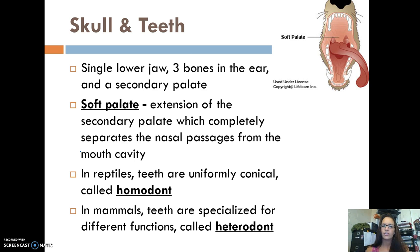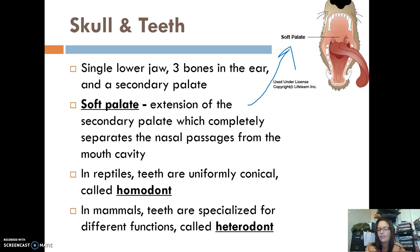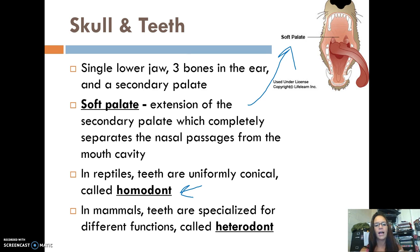In terms of the skull and teeth, all mammals have a single lower jaw and three bones in the ear, as well as a secondary palate. The soft palate is an extension of the secondary palate that completely separates the nasal passages from the mouth cavity. It's also important to note that mammal teeth are different from reptile teeth: in reptiles, teeth are all the same — called homodont — but in mammals we have different teeth for different functions, called heterodont. Your front teeth look different from your corner teeth, which look different from your back molars.